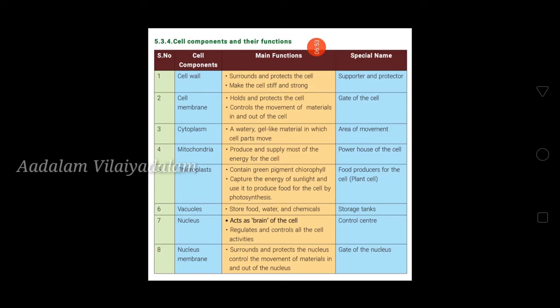Cell components and their functions: The cell wall surrounds and protects the cell, making it stiff and strong — also called the 'supporter and protector.' The cell membrane holds and protects the cell and controls movement of materials in and out — called the 'gate of the cell.' Cytoplasm is the watery gel-like material in which cell parts move — called the 'area of movement.' Mitochondria produce and supply most of the energy to the cell — called the 'powerhouse of the cell.'